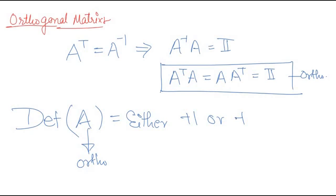The symmetric, anti-symmetric, and orthogonal matrices have real elements. When elements are complex, we use different names: a symmetric matrix becomes a Hermitian matrix, a skew-symmetric matrix becomes an anti-Hermitian matrix, and an orthogonal matrix becomes a unitary matrix. The transpose operation is then replaced by the dagger operation.